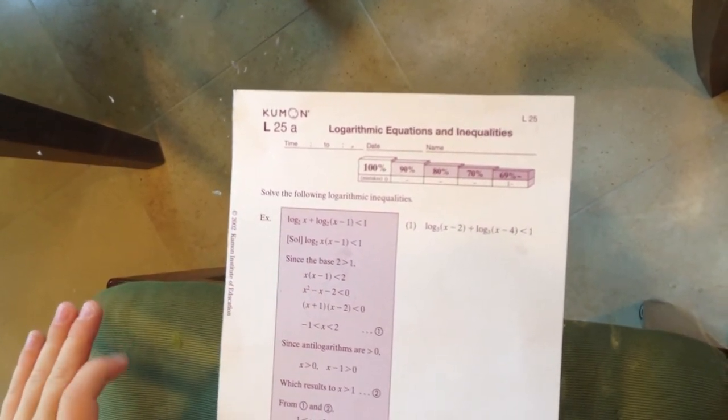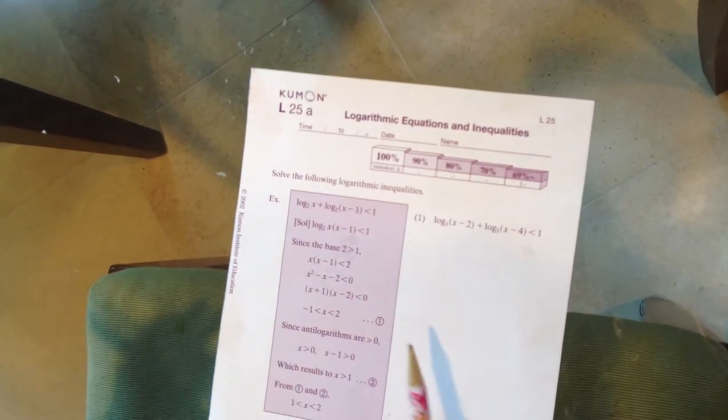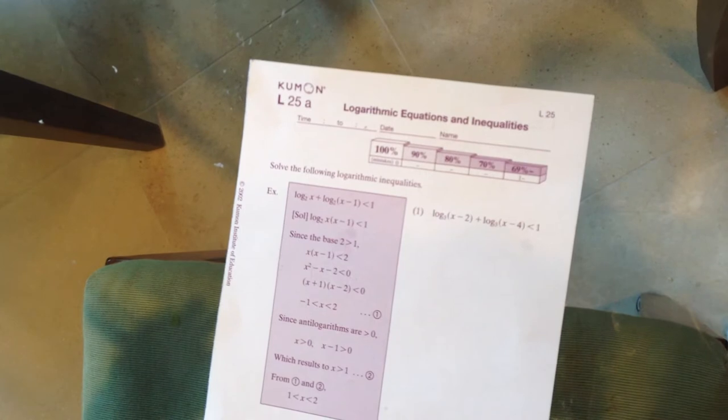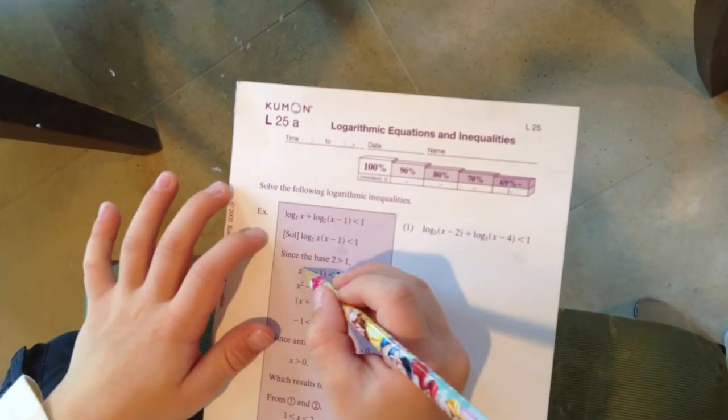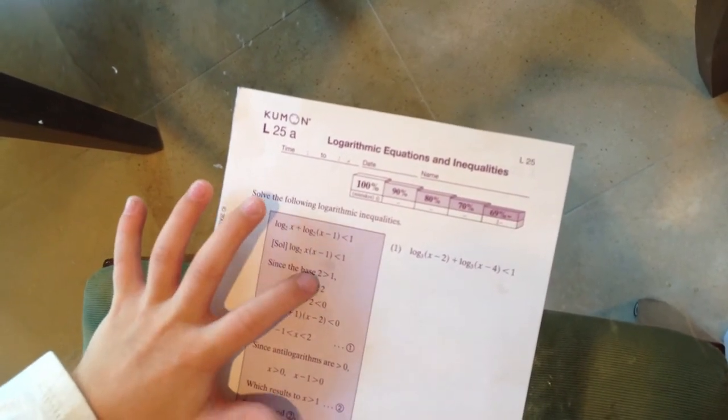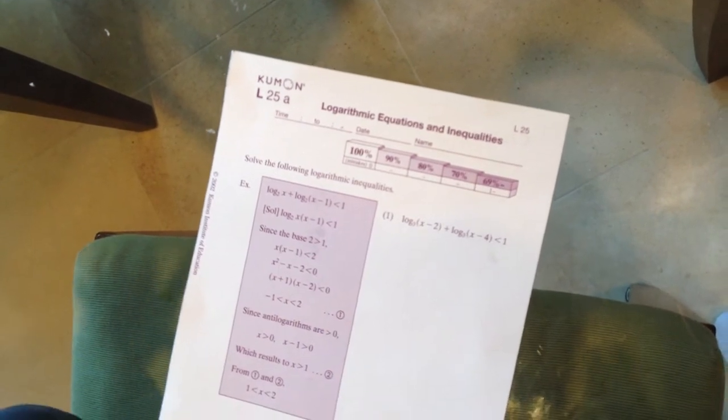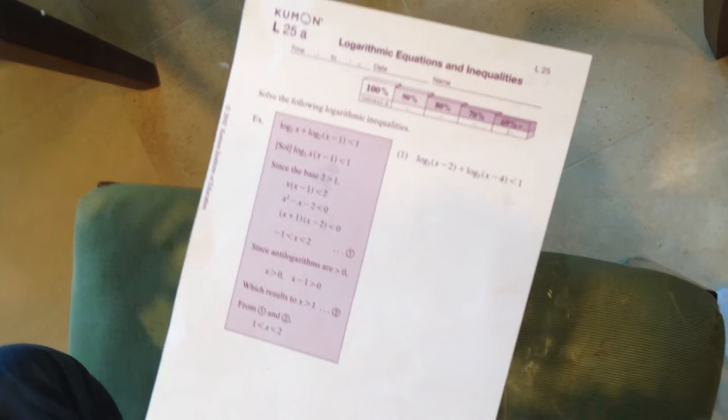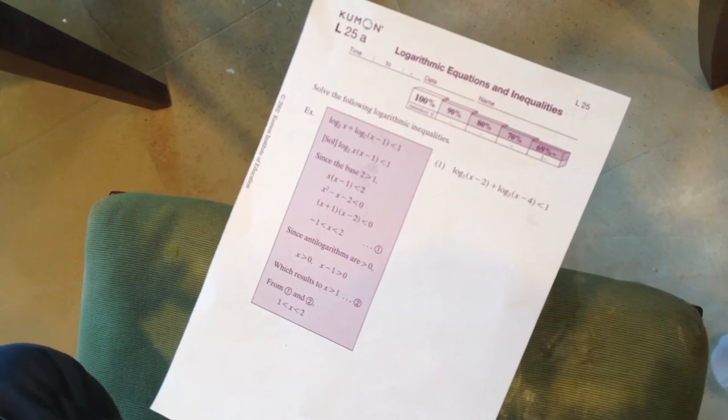that would be negative 1 is less than x, which is less than 2. Since the antilog of them are greater than 0 always, x is greater than 0, and x minus 1 is greater than 0. Now, if x is greater than 0 and x is greater than 1, the more important one is x is greater than 1, because the bigger one is 1. So really, you don't need the x is greater than 0. You need the x is greater than 1, mostly.